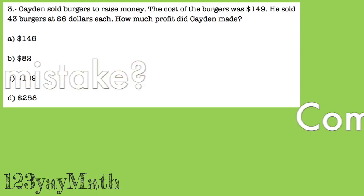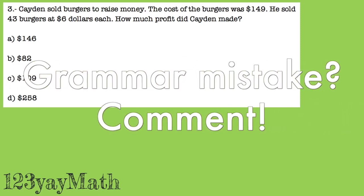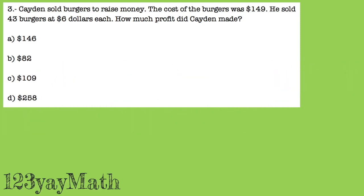Remember, if you find any mistakes, let us know. So step one: find the keywords. He sold burgers to raise money — sentence one doesn't have much information. The only thing we need to know so far is that he is selling burgers. The cost of the burgers was $149. Do you see any keywords? Yes — cost was $149.